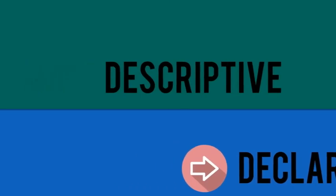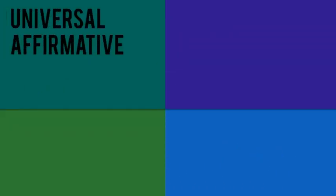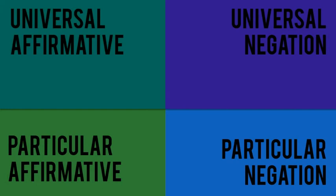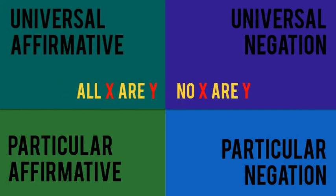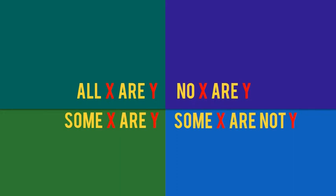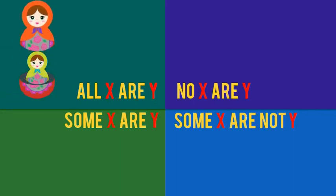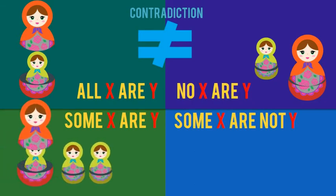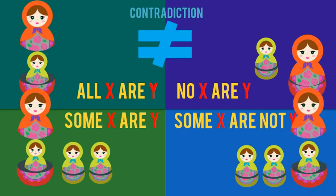You can break a declarative statement down into four different types: universal affirmative, universal negation, particular affirmative, and particular negation. They look like this: All X are Y. No X are Y. Some X are Y. And some X are not Y. So we've got 'All the green dolls are inside the red doll' — statement one. 'No green doll is inside the red doll' — statement two. Both of these can't be true, so they're said to be a contradiction or contrary to each other. Then, 'Some of the green dolls are inside the red doll' and 'Some of the green dolls are not inside the red doll' — you might need to emphasize different classes of information depending on what you have access to at any given time.